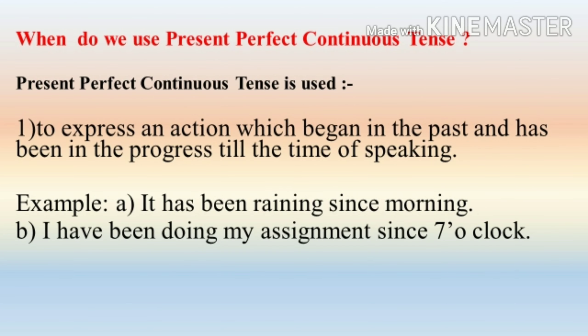Present perfect continuous tense is used to express an action which began in the past and has been in progress till the time of speaking.